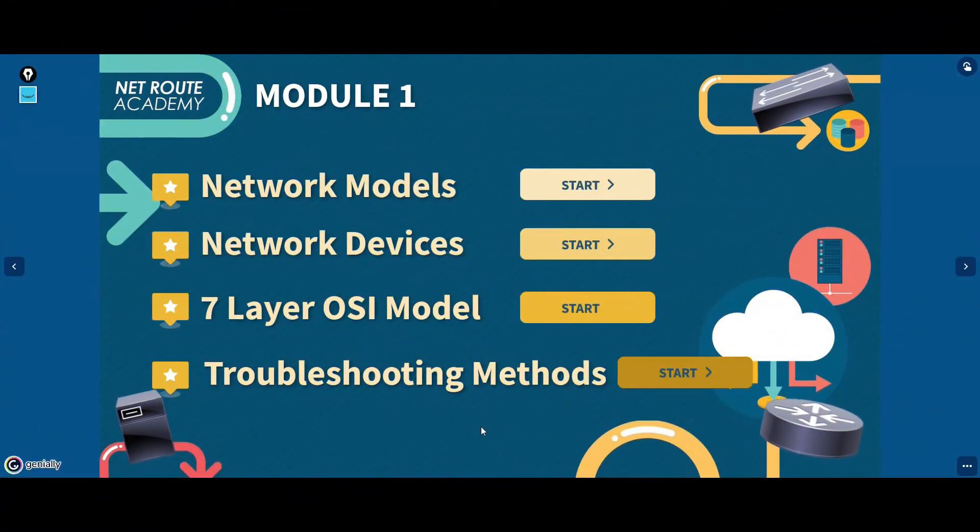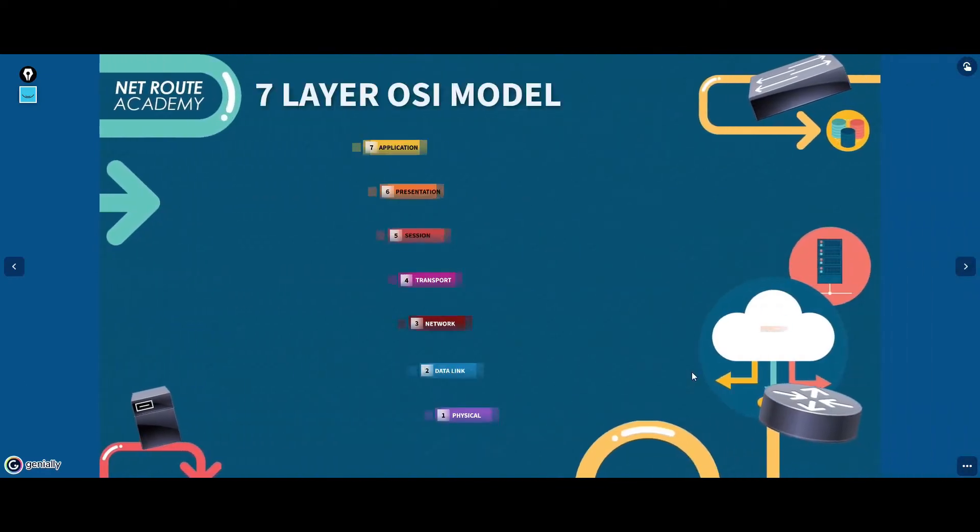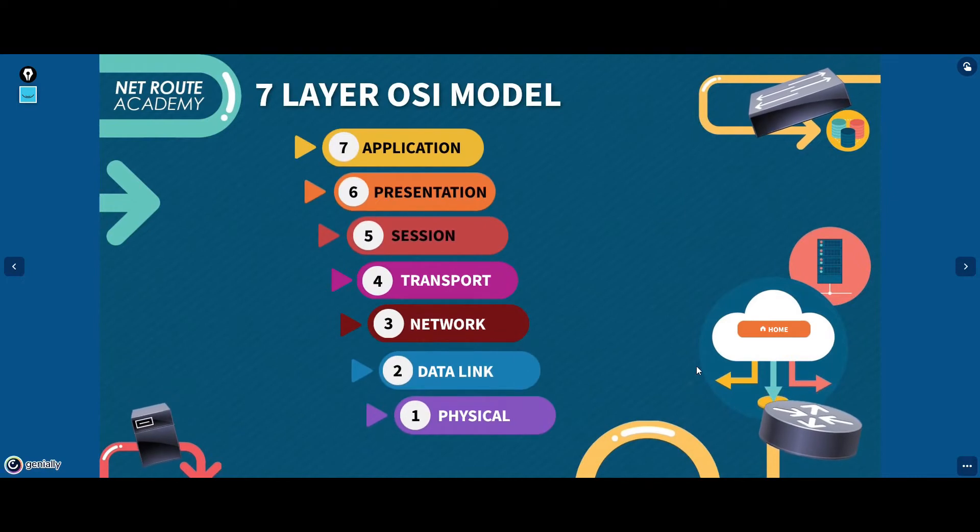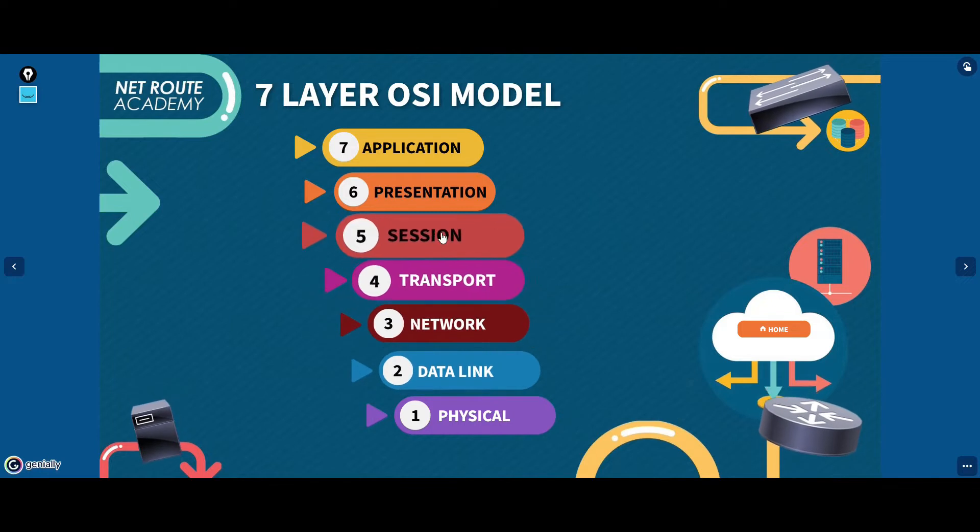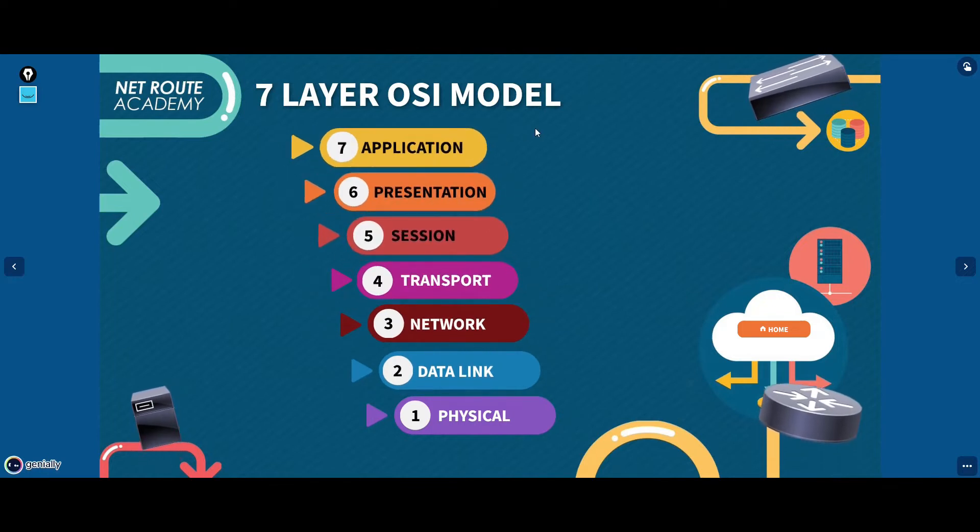The network functions are separated into seven categories in the OSI reference model. This separation of networking functions is called layering. The OSI reference model has seven numbered layers, each illustrating a specific network function. We will discuss each of these layers and their function.